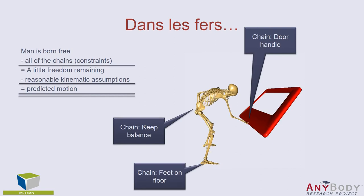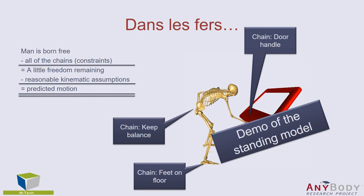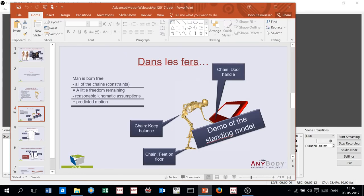Looking at the degrees of freedom accounting: we start with all motion opportunities, apply constraints (leaving a small amount of freedom remaining), then apply weak driver assumptions on top, arriving at a predicted coordinated motion. Rather than talking more about this abstractly, John opens AnyBody to demonstrate live.